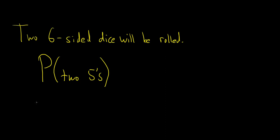So if they're both going to be fives, this means that the first die has to land on five, and the second die has to land on five. So if we want them both to be fives, the first one is a five, and the second one is a five.